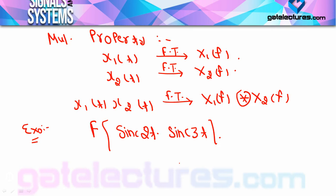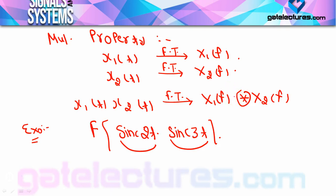तो यहाँ पर हम क्या approach यूज करेंगे? देखिए ध्यान से — यहाँ पर जो x(t) है वो दो parts में divided है: sinc(2t) और sinc(3t) का multiplication है। तो यहाँ पर अगर मैं multiplication property apply करूँ, तो sinc(2t) और sinc(3t) के Fourier transforms convolved हो जाएंगे। तो पहले हम लोग one by one Fourier transform लिख लेते हैं दोनों के।